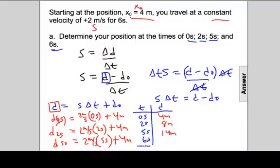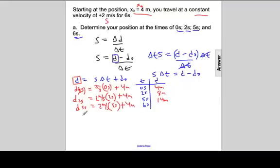And then lastly, we'll evaluate this, or solve this equation at 6 seconds. The distance traveled at 6 seconds will be 2 meters per second times 6 seconds, plus 4 meters, our starting location. 2 times 6 is 12, plus 4 is 16 meters.